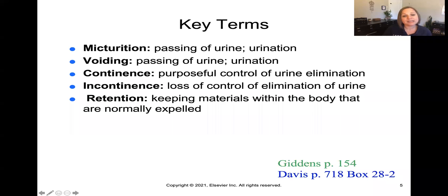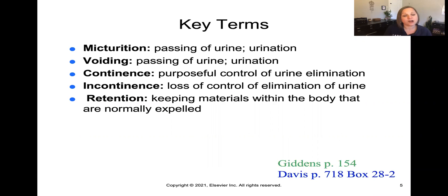Some key terms you'll need to know for urinary elimination include micturition or voiding — those words can be used interchangeably and mean the passage of urine or urination. Continence is the purposeful control of urine elimination. Incontinence is the loss of that control. And retention — urinary retention — means maintaining urine within the body that would normally be expelled.